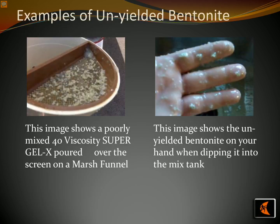To ensure successful bentonite mining, it is important to ensure good mixing of the materials. Poorly mixed materials can lead to unyielded bentonite, which is a common problem. An example of unyielded bentonite can be seen on a marsh funnel and on a person's hand. The marsh funnel is used to measure the viscosity of the bentonite mix, while the person's hand is used to inspect it visually. Poorly mixed bentonite can create a weak mix that is unable to yield, resulting in a poor quality product.